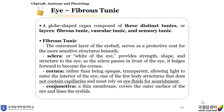The eye is a globe-shaped organ composed of three distinct tunics, or layers: fibrous tunic, vascular tunic, and sensory tunic. The fibrous tunic is the outermost layer of the eyeball, serving as a protective coat for the more sensitive structures beneath. The sclera, or white of the eye, provides strength, shape, and structure. As the sclera passes in front of the eye, it bulges forward to become the cornea, which is transparent rather than opaque, allowing light to enter the interior of the eye. One of the few body structures that does not contain capillaries, the cornea must rely on eye fluids for nourishment. The conjunctiva is a thin membrane that covers the outer surface of the eye and lines the eyelids.